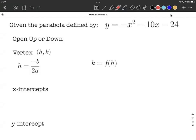Okay, we're given a parabola, y equals negative x squared minus 10x minus 24. I want to answer some questions about this, such as does it open up or down, find the vertex, x-intercepts, and the y-intercept. So to get through this,